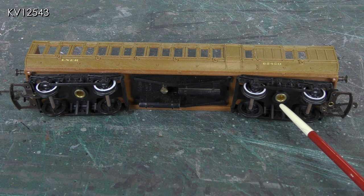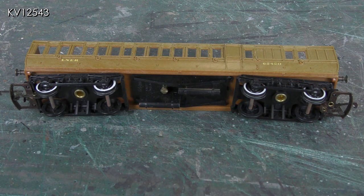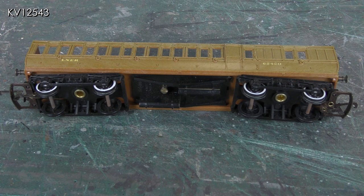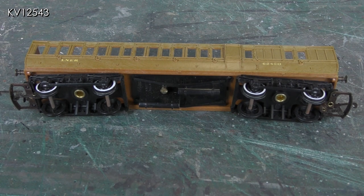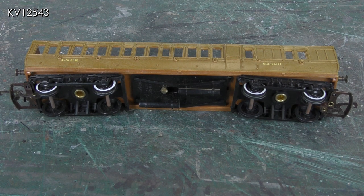In this old model, the bogies are attached to the body by rivets. Newer models may well be different. I am not going to attempt to remove the rivets, so unfortunately all work will have to be carried out with the body still attached to the chassis.